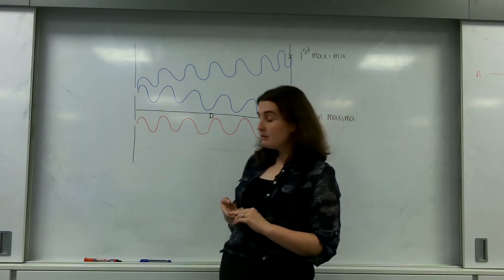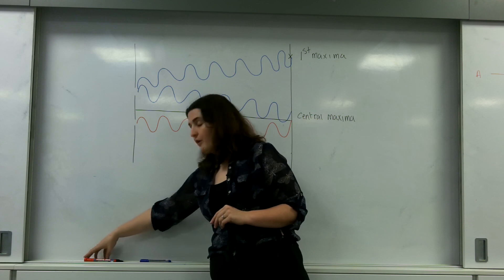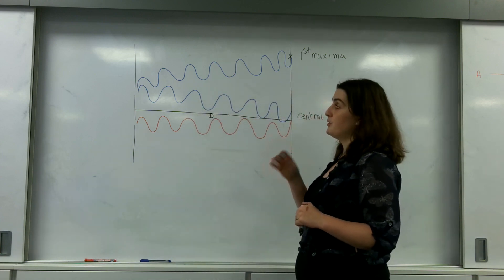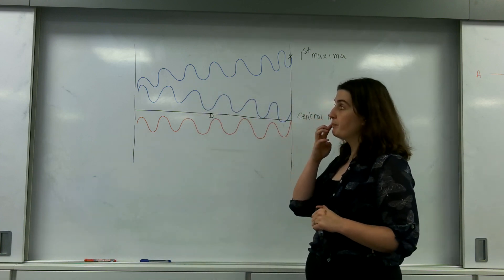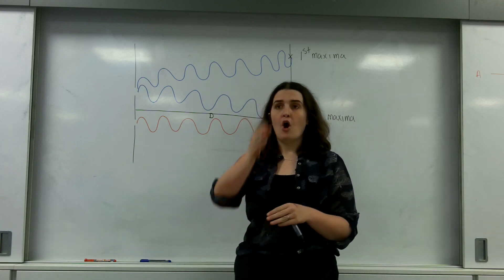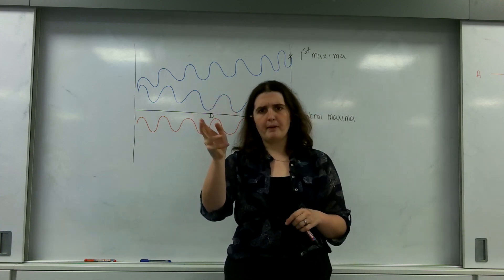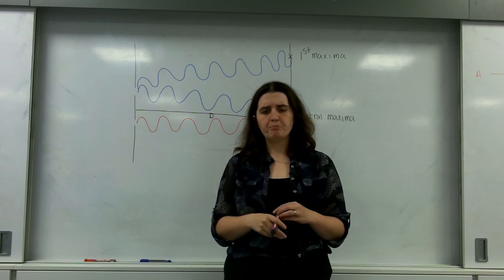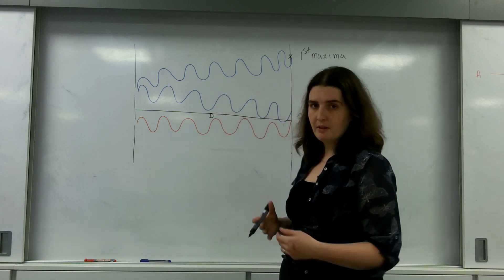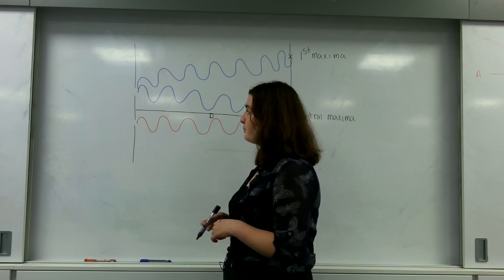Young was very specifically looking at what was happening with these two waves. What he noticed was there was a pattern of bright bits and dark bits and bright bits and dark bits. And we came to some mathematical rearranging at this point.